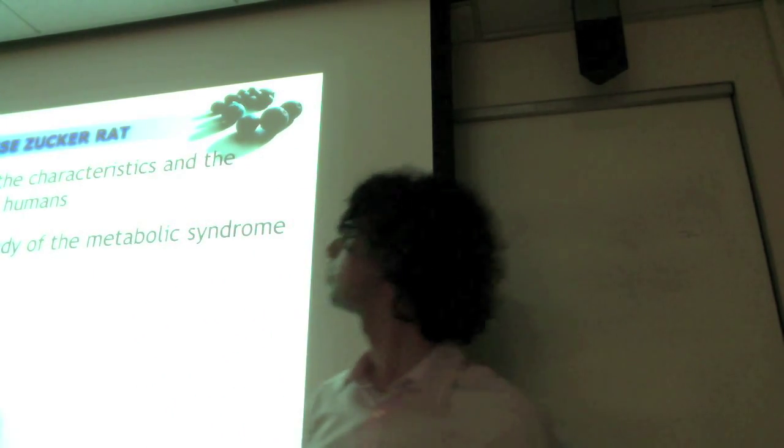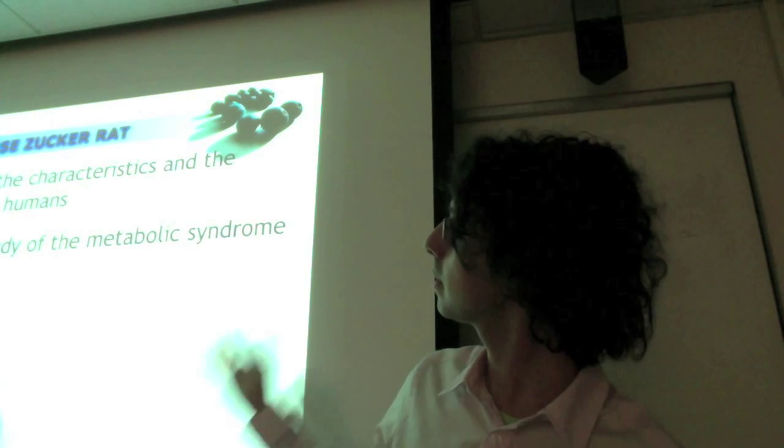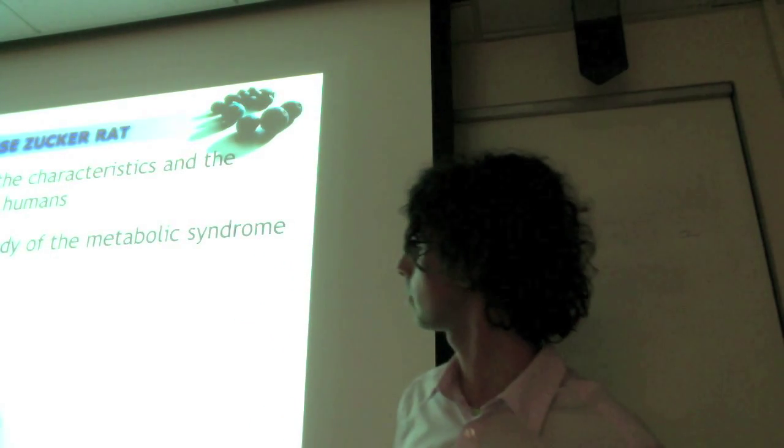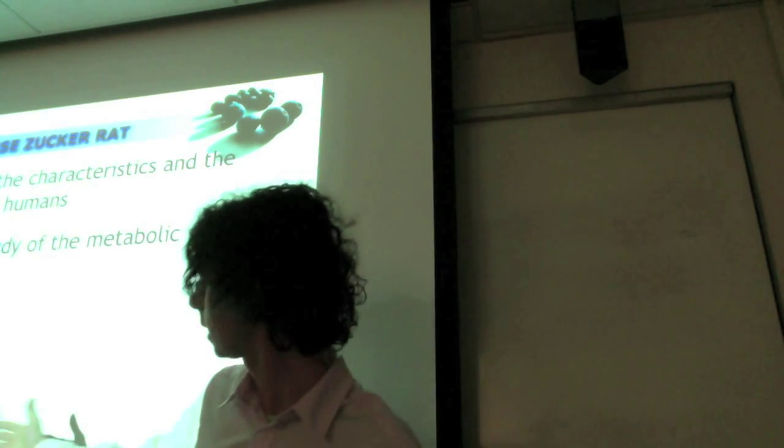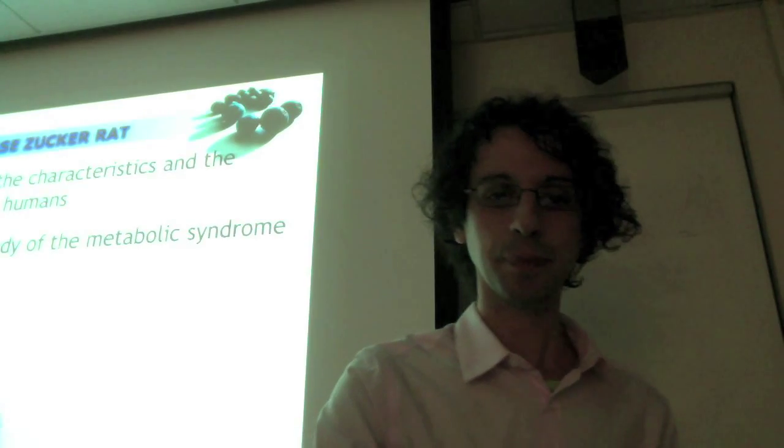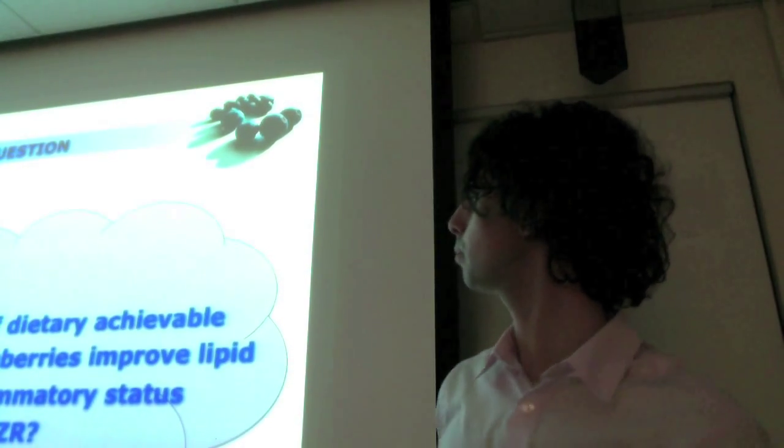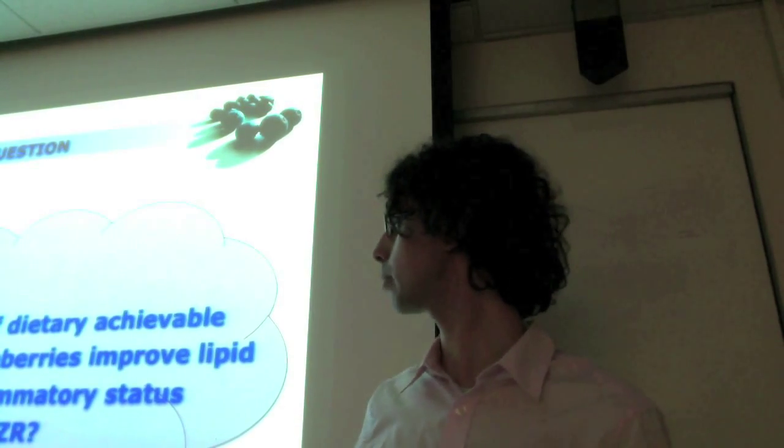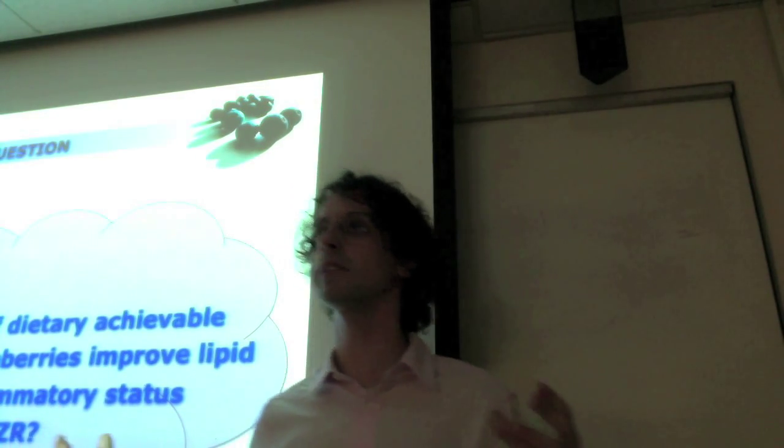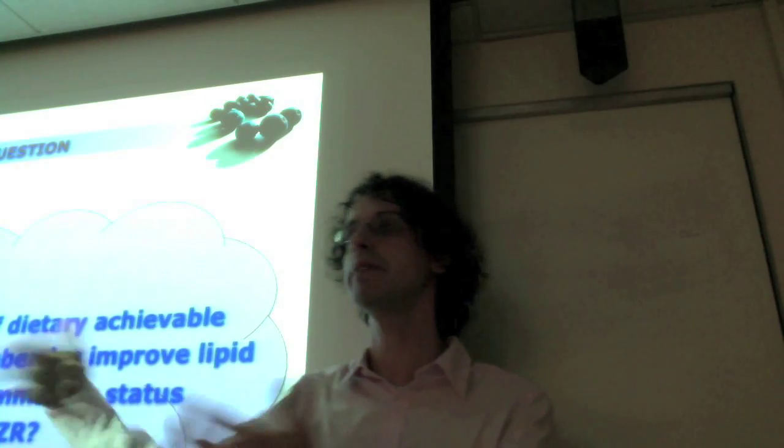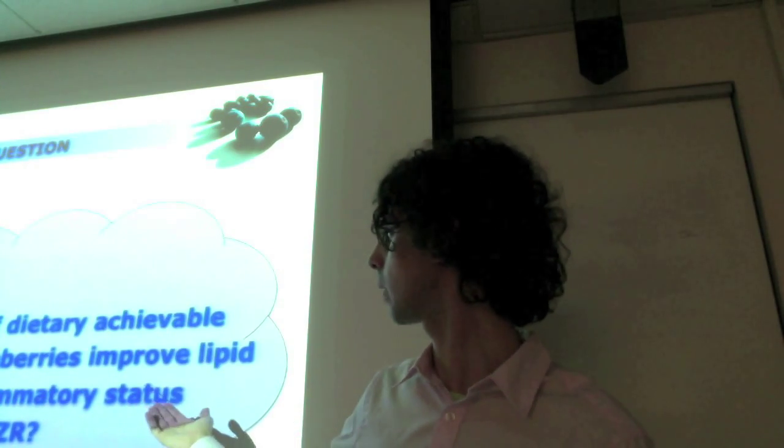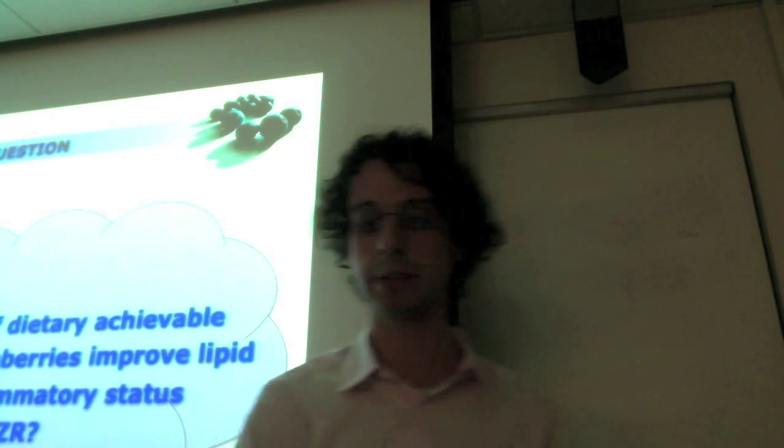The model that we're using for this is the obese Zucker rat. It has striking similarities with how the metabolic syndrome appears and progresses in humans. So it's a good model for studying this condition. And this guy here is from our small animal facility. I took the picture myself. It's living over there. So the question: can consumption of dietary-achievable amounts of wild blueberries improve lipid profile and inflammatory status in this model of the metabolic syndrome? They are genetically altered by themselves. This strain was developed to have this genetic alteration so that they start having all these abnormalities where there is a lot of inflammation going on and high cholesterol, high triglycerides.